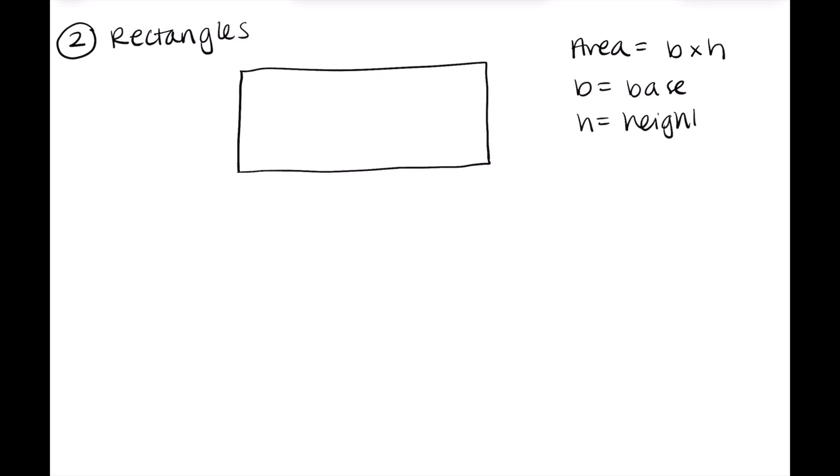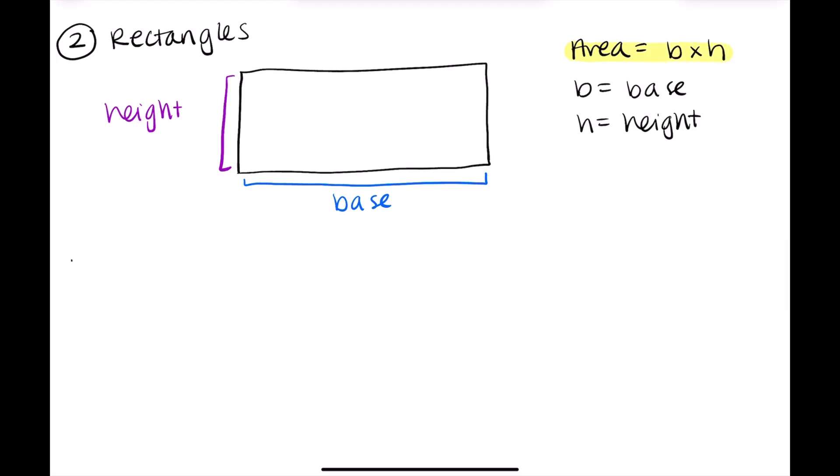And I'll go through here and I will color code the base. The base again in blue is what the rectangle sits on. Imagine if it was on the table, that is the base of it, and the height is how tall it is, so that I have shown for us in purple. So now that we have the equation for area of a rectangle, we'll get into perimeter.